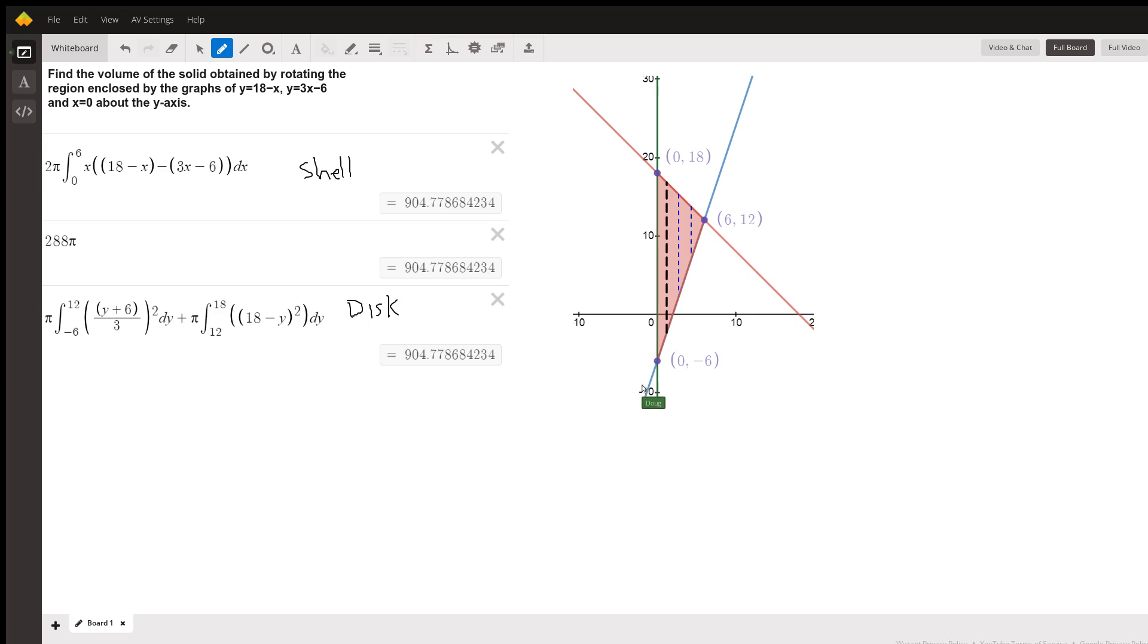This blue line is the line y equals 3x minus 6. You can find the point of intersection by setting 18 minus x equal to 3x minus 6 and solving for x. And you find out that when x is 6, y is 12.